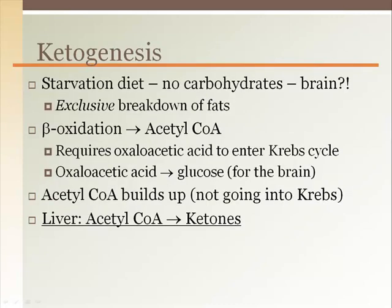Ketogenesis is the production of ketones, which are formed when fat is converted into glucose. If there is no glucose or carbohydrates available for the cell to use as energy, then glucose has to be made from fat. Many cells can use fat for energy, but not the brain. Under normal circumstances, when the fatty acid chains go through the beta-oxidation process to convert to acetyl-CoA, oxaloacetic acid is required to enter the Krebs cycle.